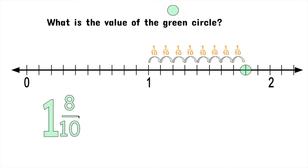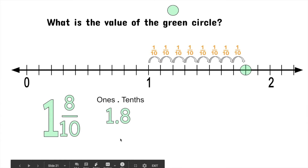Now, what about as a decimal? I'm looking at the ones and the tenths place. This time I do need the ones place because I have one plus the eight tenths. So we're going to have one in the ones place and eight in the tenths place — that's one and eight tenths. Both of these are read as one and eight tenths.